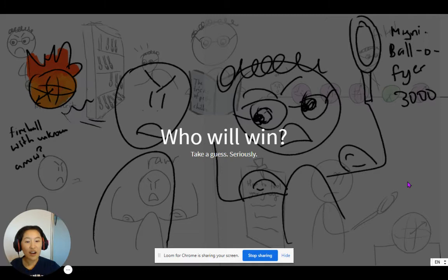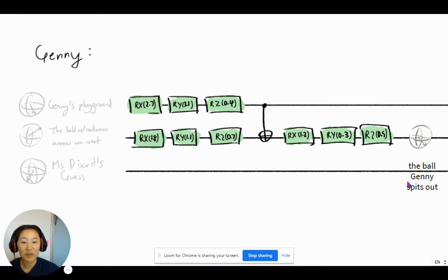And take a guess, will Jennie prove to the world that kids are phenomenal, kids are smarter than adults give them credit for? Or will Mrs. Discrit prove that being older really does equate being wiser? Well, take a guess, there is a definite answer. And while you think about it, I will give you a crash course on quantum circuits.